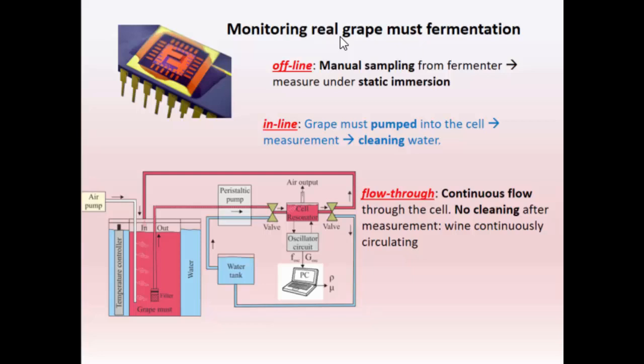One is offline with manual sampling and measurement. The other is inline, and for the inline and the flow-through measurements we implement this fluidic circuit where we start with a peristaltic pump, we pump the liquid and we also have this parallel circuit for water for cleaning. So in the offline we just manually measure the grape must. In the inline we pump and measure and then clean and for the flow-through we have a continuous flow of the liquid during all the fermentation process which takes place in five to ten days. So the sensor is measuring every minute the density and the viscosity.